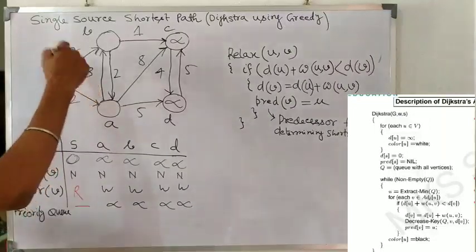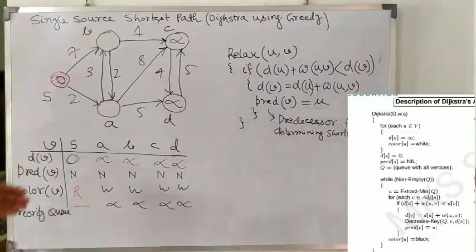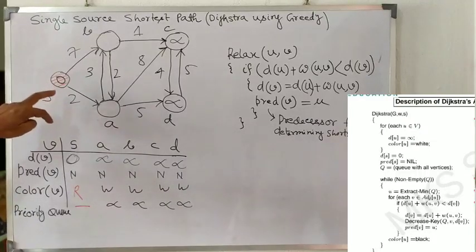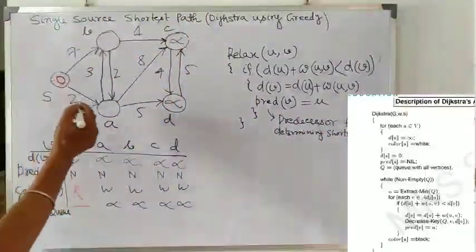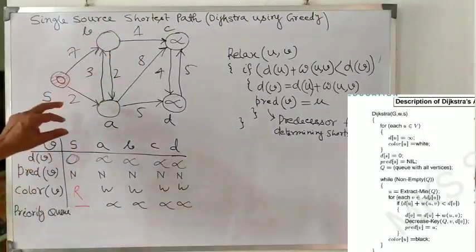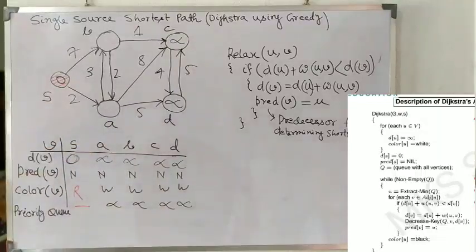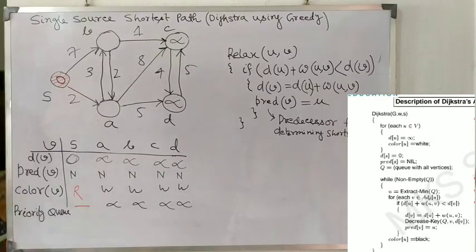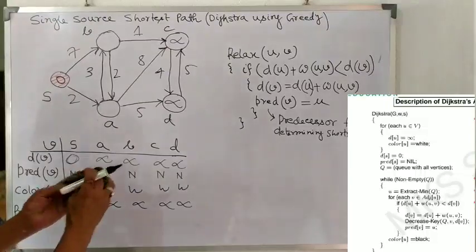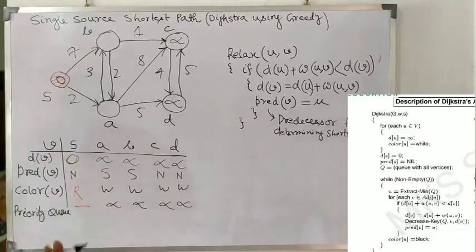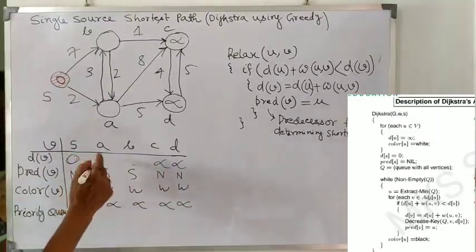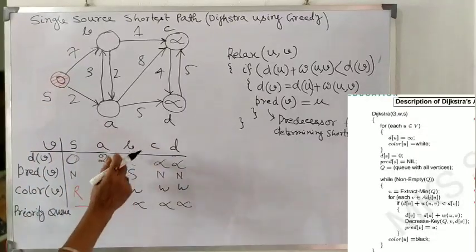Now, from the source node, where can we reach? We can reach from source to A and source to B — there are two reachable nodes. We update the predecessor: we can reach from S to A and S to B. The corresponding value of S to A is 2 and S to B is 7. Applying the relaxation algorithm, we can see that 2 is the minimum, so we update D(A) as 2.